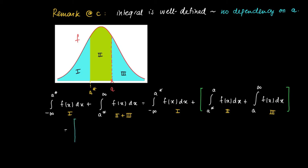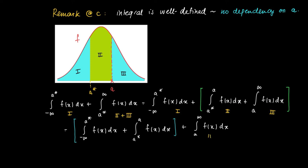Now we have a sum of three integrals, and we can recombine areas 1 and 2. Let's group 1 and 2: we get the integral from minus infinity to a star, f(x) dx, plus the integral from a star to a, f(x) dx. This will be a new group, plus the integral from a to infinity, f(x) dx. Here is area 3, and we combine areas 1 and 2. Of course, areas 1 and 2 can be written much shorter as the integral from minus infinity to a, f(x) dx. And we keep the third part, the integral from a to infinity, f(x) dx.